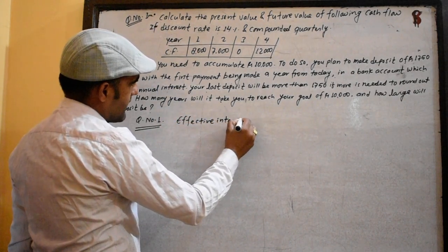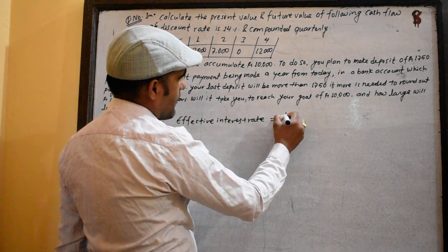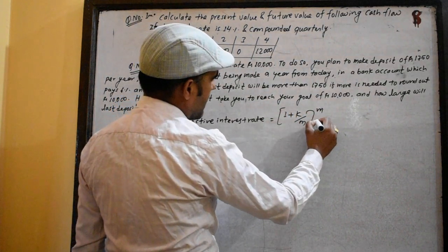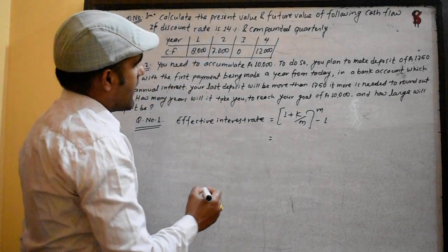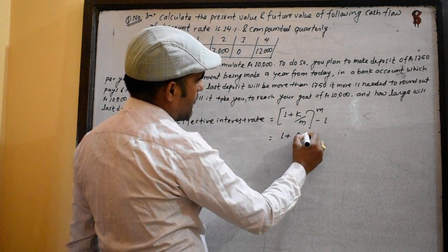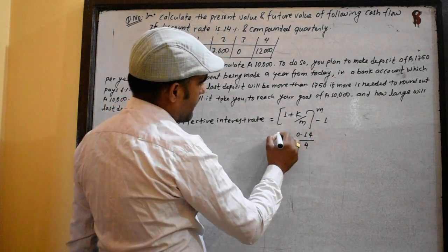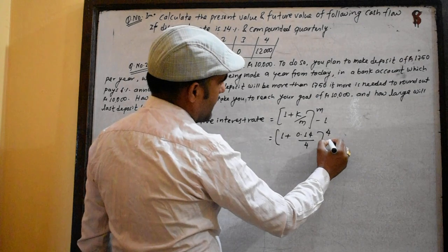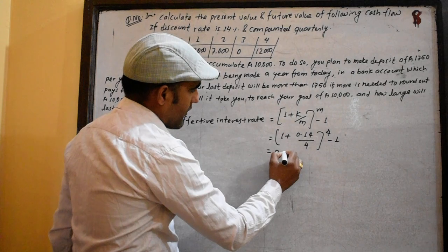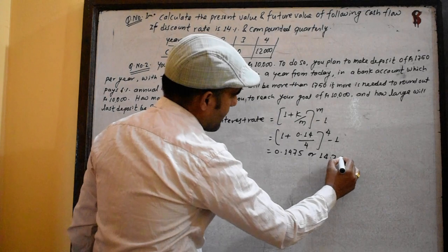First, we calculate the effective interest rate (EIR). The formula is: EIR = (1 + k/m)^m - 1. With k = 0.14 and m = 4, we get (1 + 0.14/4)^4 - 1 = 0.1475, so the EIR is 14.75%.